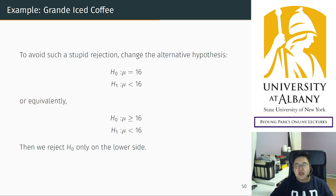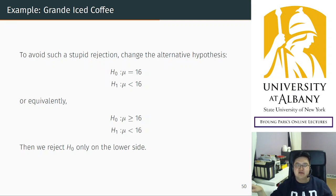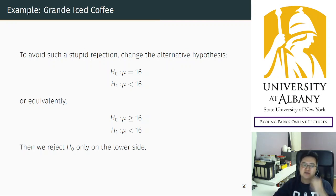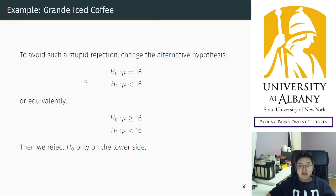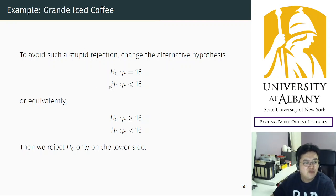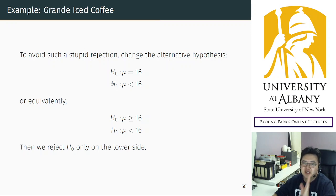So far, we did not pay any attention to the alternative hypothesis — it was simply everything other than the null hypothesis. But now, we are going to change the alternative hypothesis to an inequality. For example, you may change the alternative hypothesis so that you are going to punish Starbucks only when their amount is less than 16 ounces.